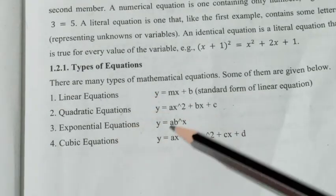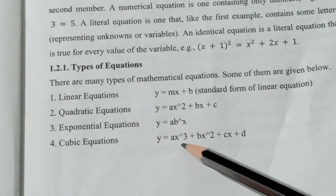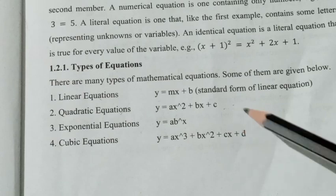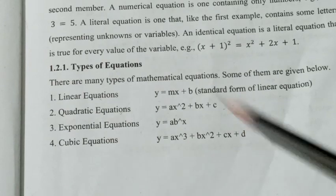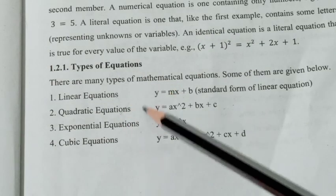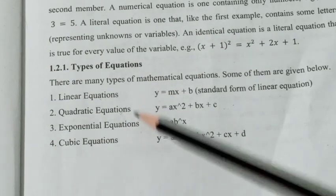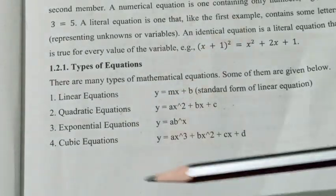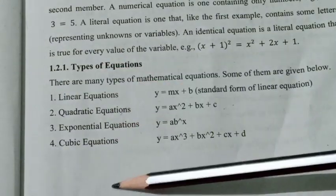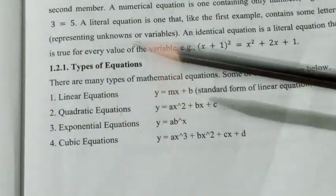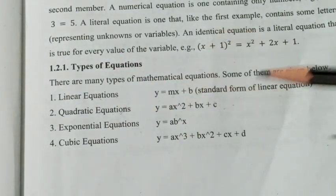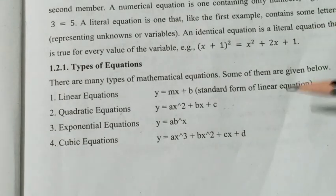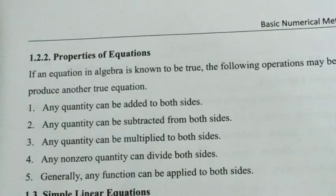A cubic equation is y equals ax cubed plus bx squared plus cx plus d. These are the main types of equations. Now we will look at the properties of equations.